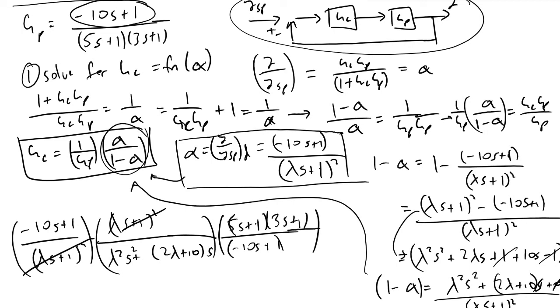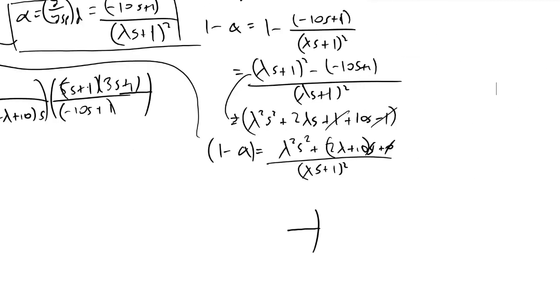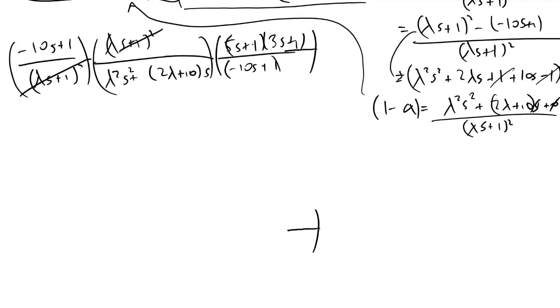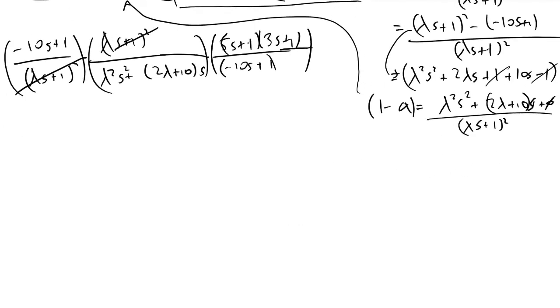The whole point of this process was that we could cancel out this term and this term. Now what we find is that the controller transfer function that we've just derived via the direct synthesis method has the form (5s plus 1)*(3s plus 1) divided by lambda squared s squared plus (2*lambda plus 10)*s.